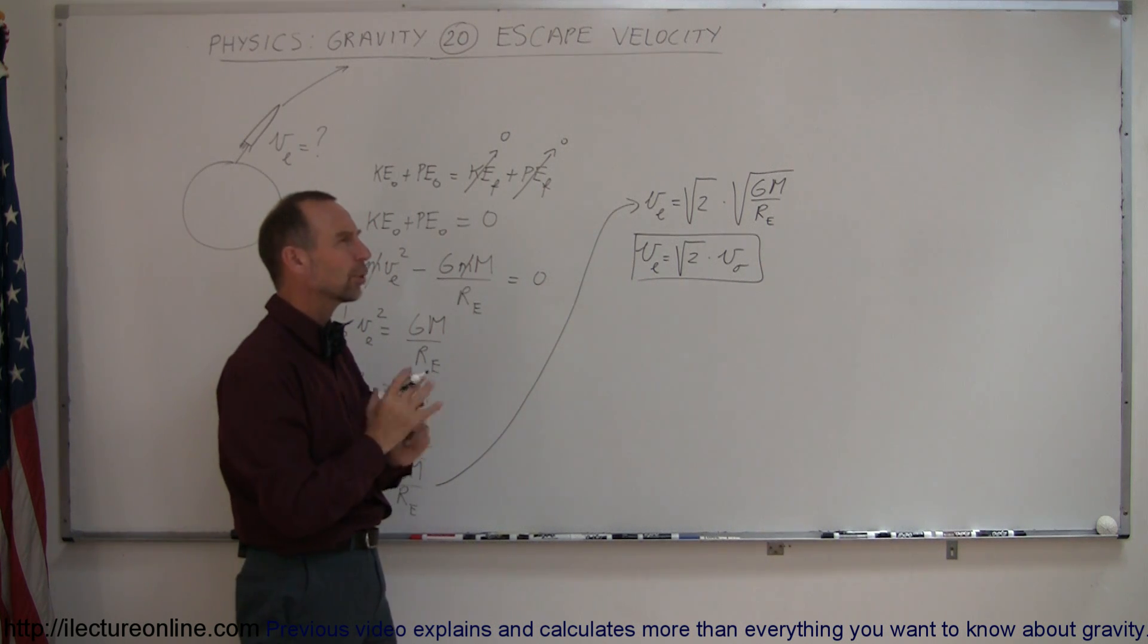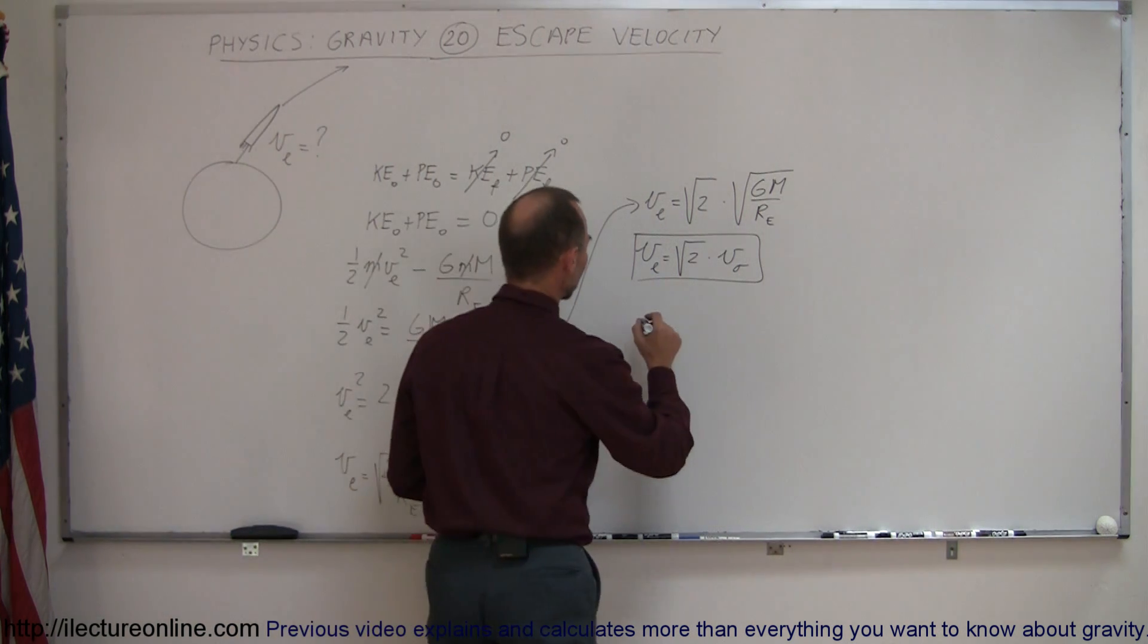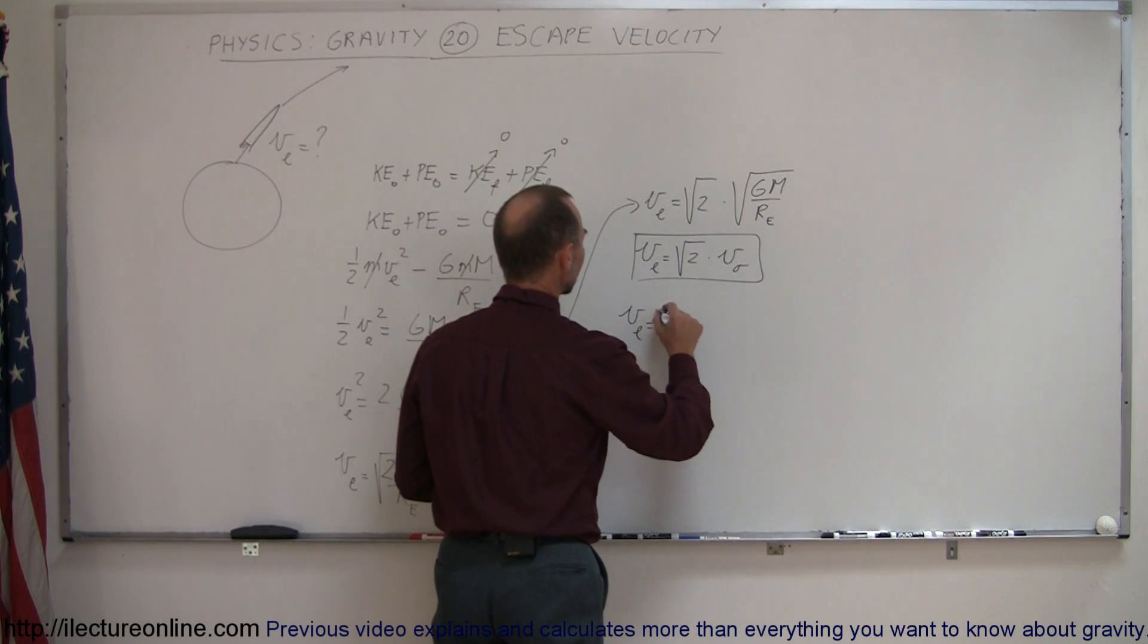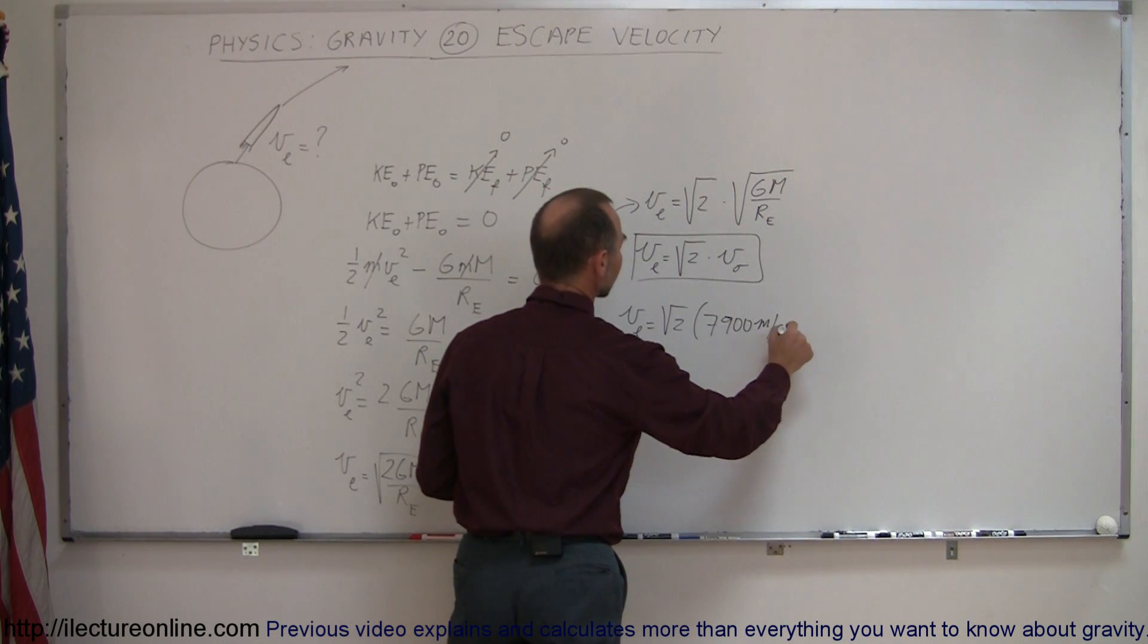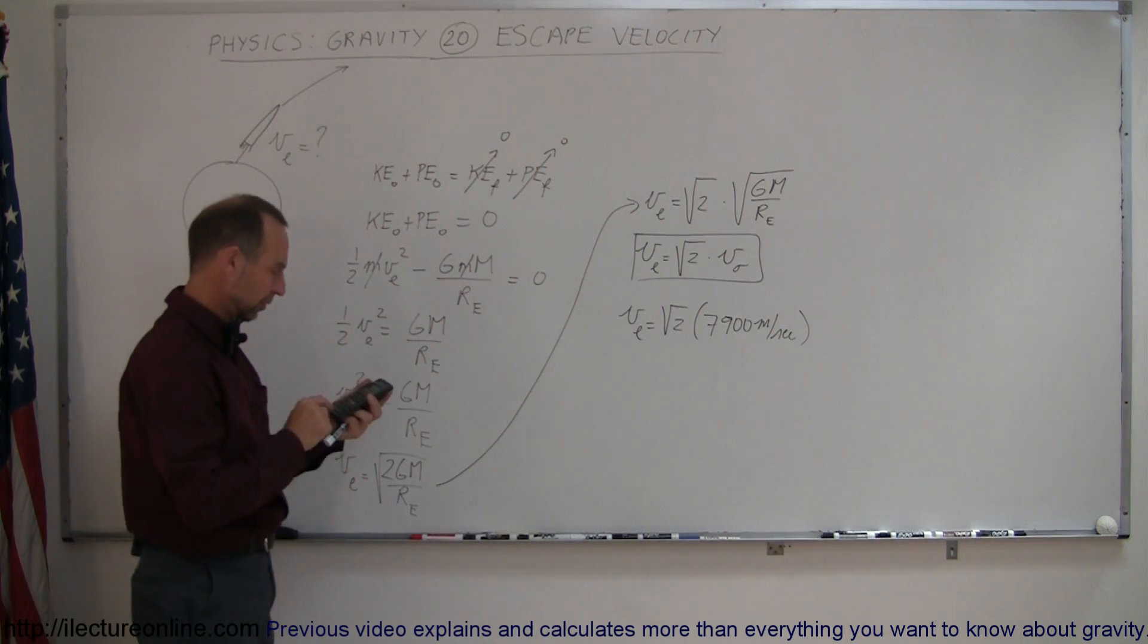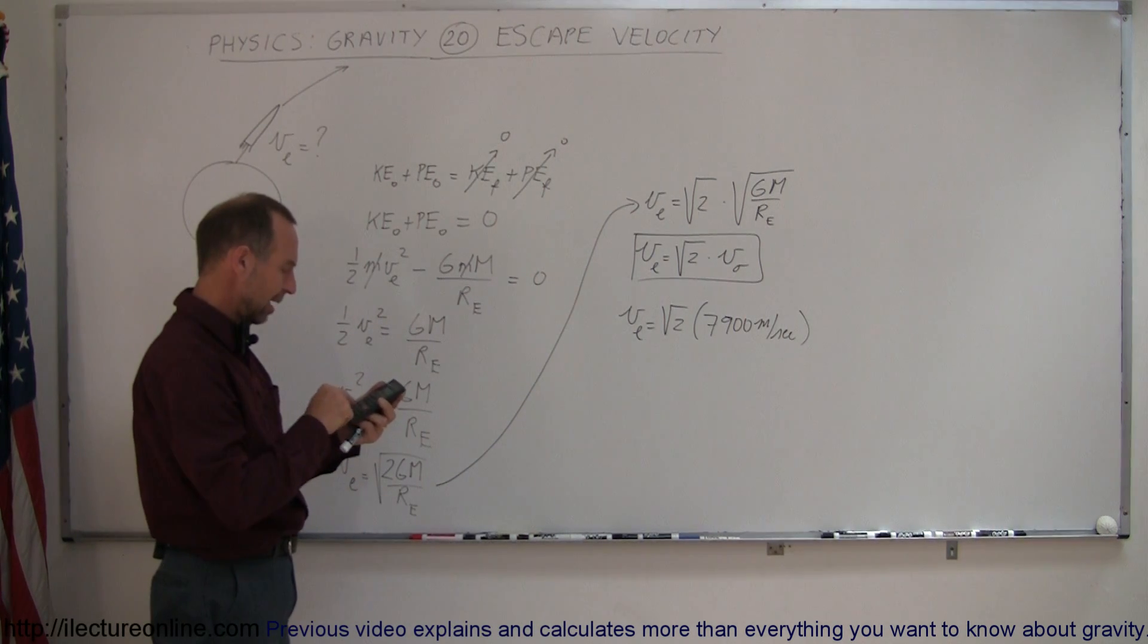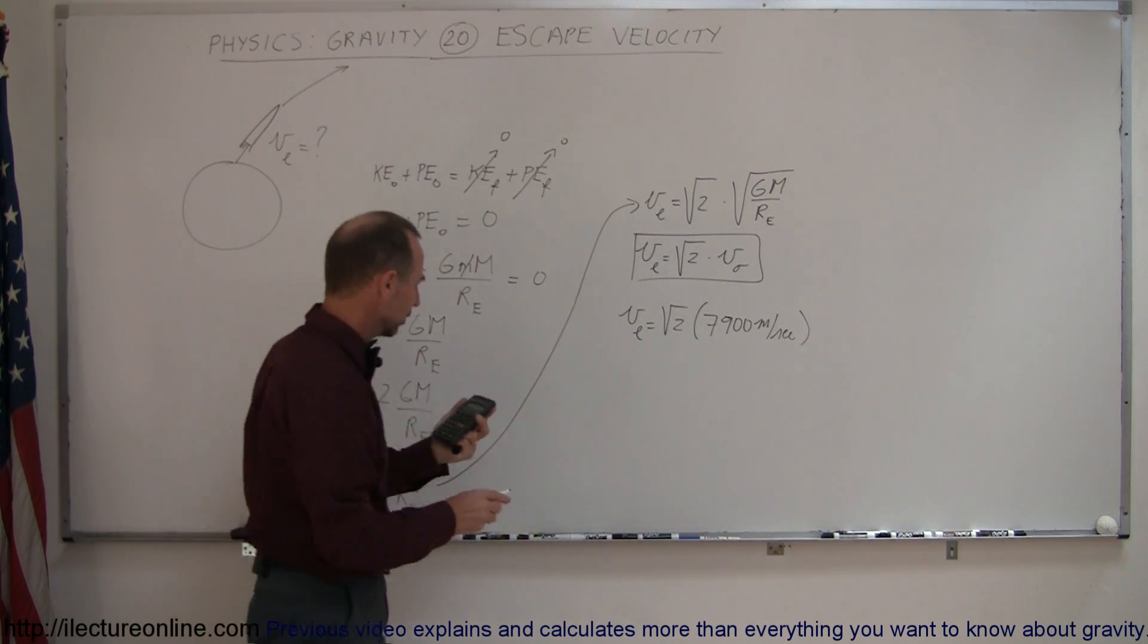And if you remember what the orbital velocity was for the Earth, which was around 7,900 meters per second, the escape velocity is equal to the square root of two times about 7,900 meters per second. And let's see what that is equal to. So two, take the square root, times 7,900.